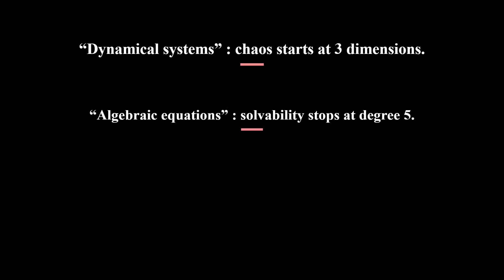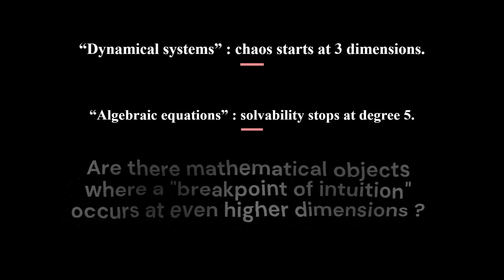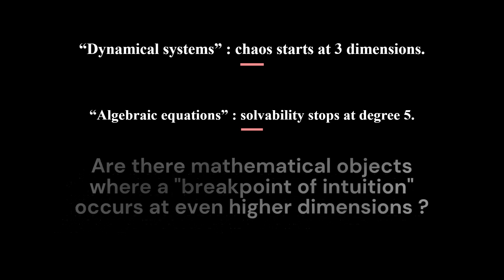If you're a STEM major, then you might quickly recall how chaotic attractors occur only at three dimensions and beyond for deterministic continuous time dynamical systems. If you're a bit more hardcore, then you might also think of how algebraic equations are generally not solvable in terms of radicals at degree 5 and beyond. Now, are mathematical objects where a breakpoint of intuition occurs at even higher dimensions?